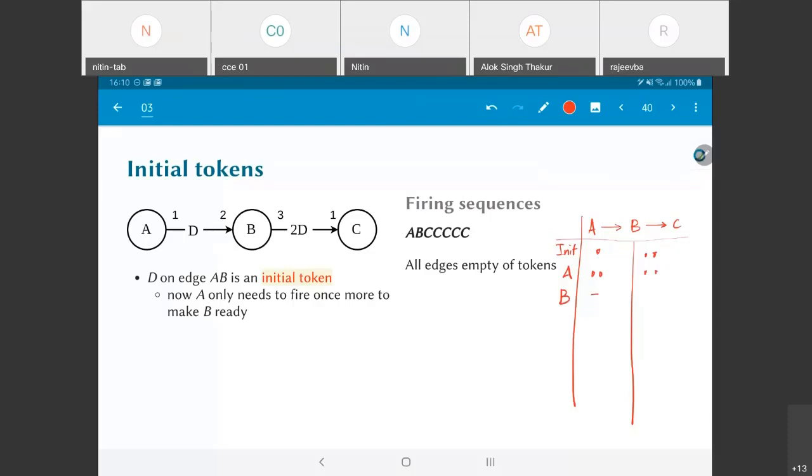Now B fires once. It takes away the tokens from A to B but puts three more tokens onto the B to C edge for a total of five. Now I have one, two, three, four, five. The A to B edge remains unchanged, this reduces.